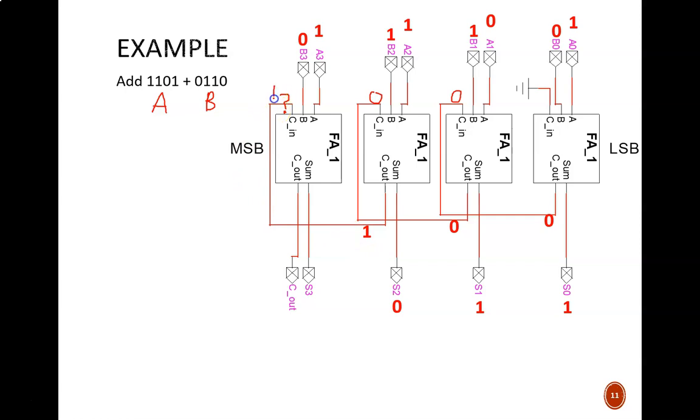Finally, 1 plus 0 plus 1 equals 10, giving us the last two bits of the output. Remember that this final cout in unsigned binary is the fifth bit of the sum.